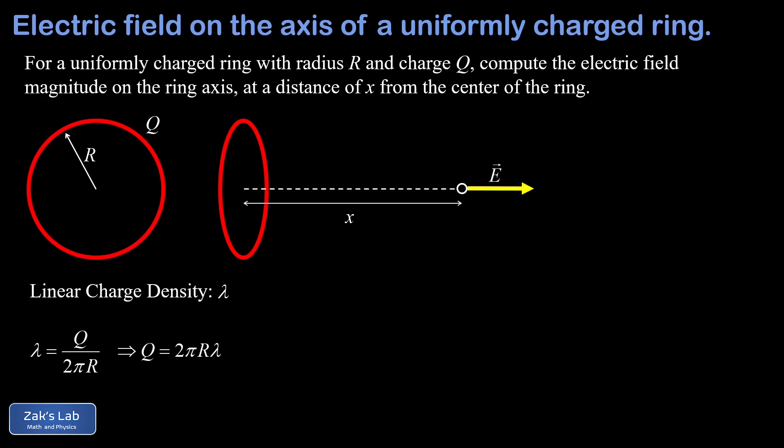To find the electric field at our observation point, we're going to chop this ring of charge into infinitesimal arc segments with a length called ds. Each of these little segments acts as a point charge, allowing us to use the standard formula for the electric field due to a point charge. Each ds subtends an angle dθ, and we use the arc length formula: ds = R dθ. The charge contained in that infinitesimal arc, dq, is lambda times ds, or lambda R dθ.